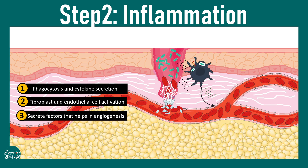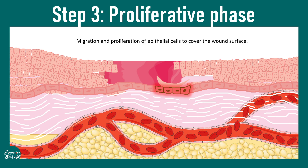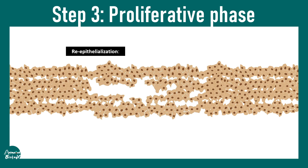The fibroblasts and endothelial cells which are activated eventually secrete the growth factors we already talked about. A bunch of growth factors are secreted by these cells to help in the angiogenesis process. One of the major factors that helps in angiogenesis is platelet-derived growth factor and transforming growth factor beta, secreted by macrophages, which can lead to new blood vessel formation. Eventually there would be migration and proliferation of epithelial cells to cover the wound site, a process known as re-epithelialization.